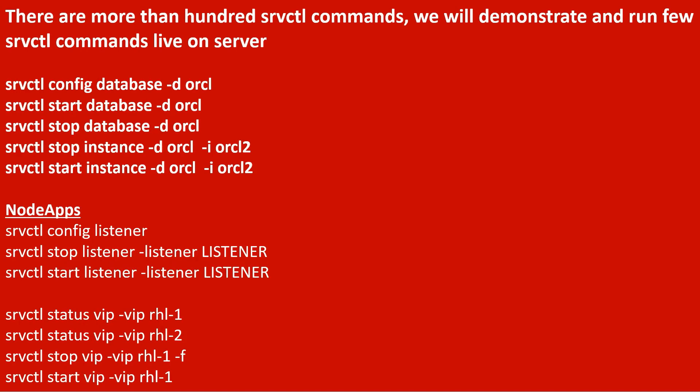There are more than hundreds of SRVCTL commands and we will now demonstrate a few on a server. SRVCTL config database will show the configuration of the database on the cluster. SRVCTL start database -d orcl, where orcl is the primary name of the database, and similarly SRVCTL stop database -d orcl. These commands will start and stop the database on all the nodes of the cluster.